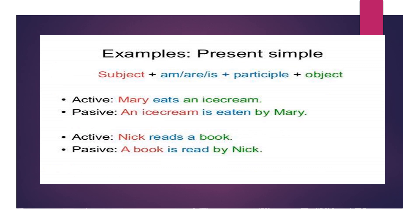Another example for the present simple: 'Mary eats an ice cream.' I'll begin with 'an ice cream.' 'Eats' is present simple, so I put am, is, or are and then the past participle. So: 'An ice cream is eaten by Mary.' Also: 'Nick reads a book' becomes 'A book is read by Nick,' because the past participle of 'read' is 'read' — written the same but pronounced differently.